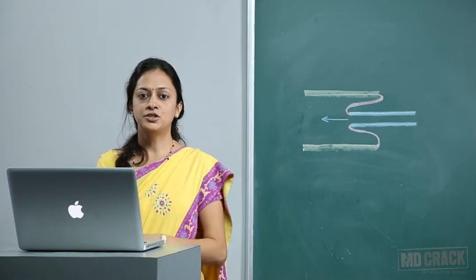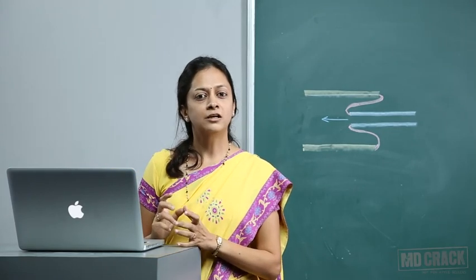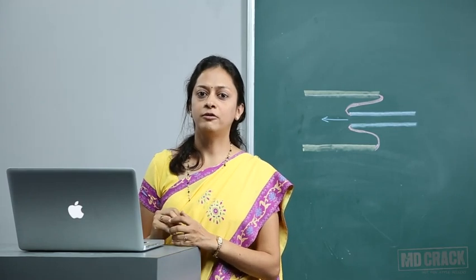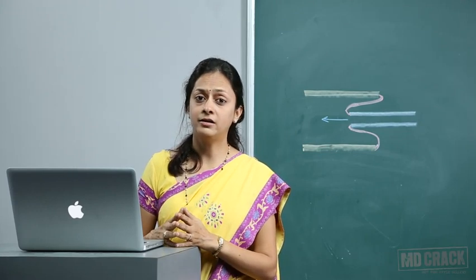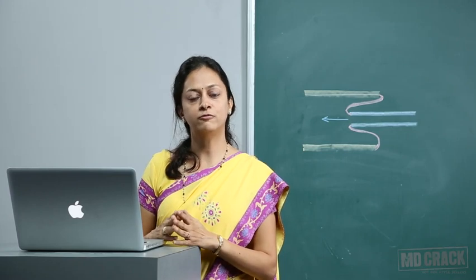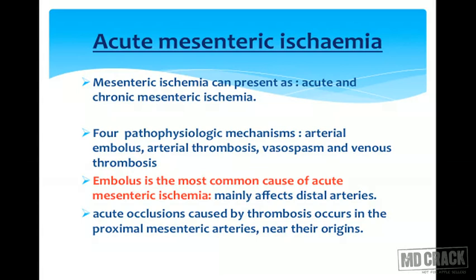Acute mesenteric ischemia is a very important topic. Always remember it can be arterial as well as venous — there are four forms: arterial embolus, arterial thrombosis, vasospasm, or venous thrombosis. Embolus is the most common cause of acute mesenteric ischemia and mainly affects the distal arteries. Acute occlusion caused by thrombosis occurs in the proximal mesenteric arteries near their origin.